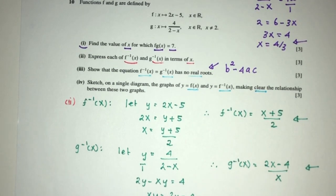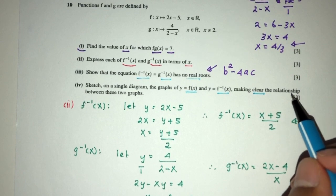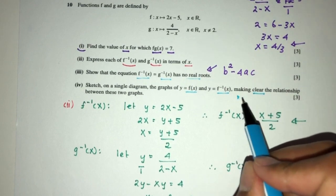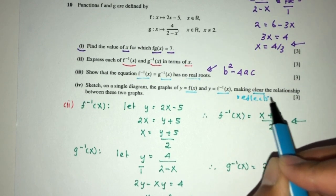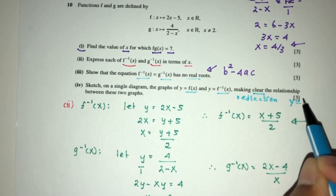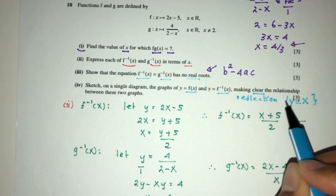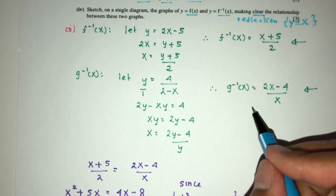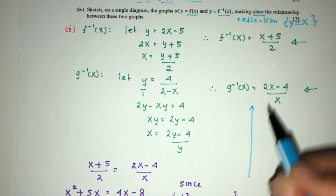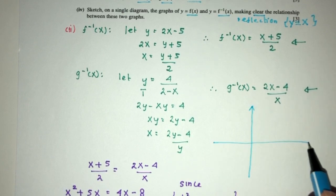Let's move on to part 4. On a single diagram, sketch the graphs of f(x) and f inverse(x), making clear the relationship between the two graphs. These questions come up often and are pretty easy. The main thing is understanding that the relationship between a graph and its inverse is always a reflection in the line y = x.